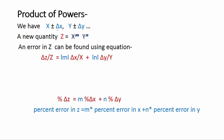Now, how do we find error in the product of powers? Here we have two given quantities x and y with errors delta x and delta y, and we have to find a new quantity z equals x raised to the power m times y raised to the power n. We can find the error in z using the formula: delta z over z equals m times delta x over x plus n times delta y over y. The exponent on x is multiplied with delta x over x.